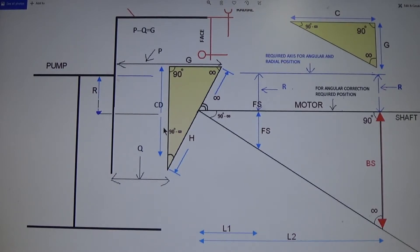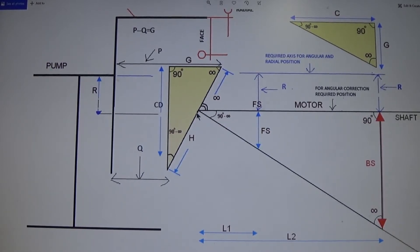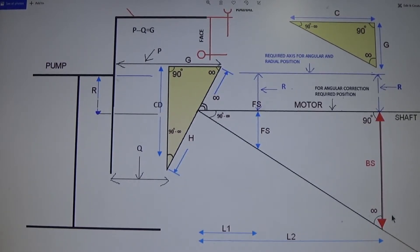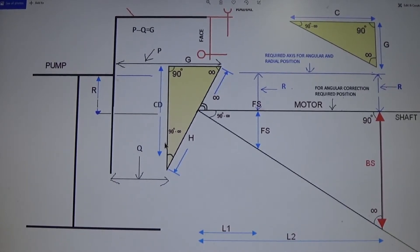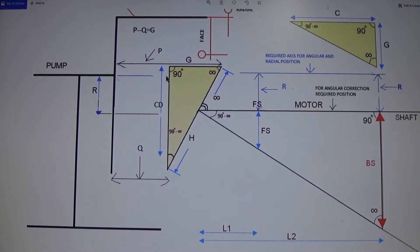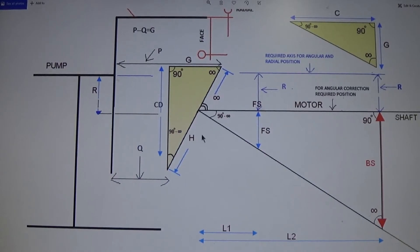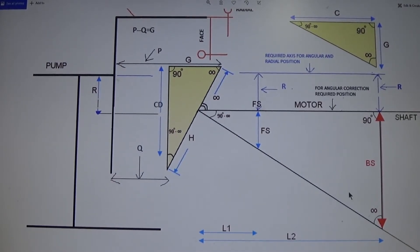I think it is all clear about all these different things. Now you can see here there are two triangles — one triangle is this and one triangle is this. And this triangle is also here. These three triangles are similar triangles as per their geometry.